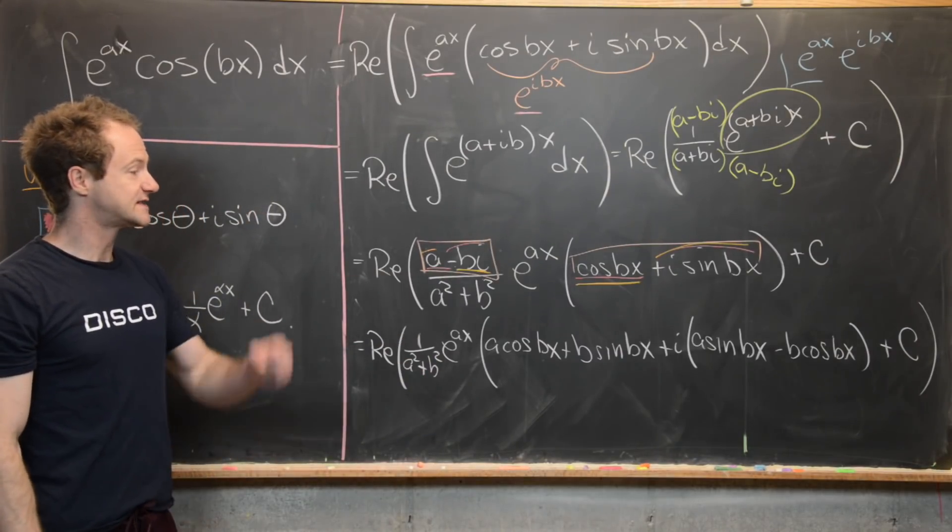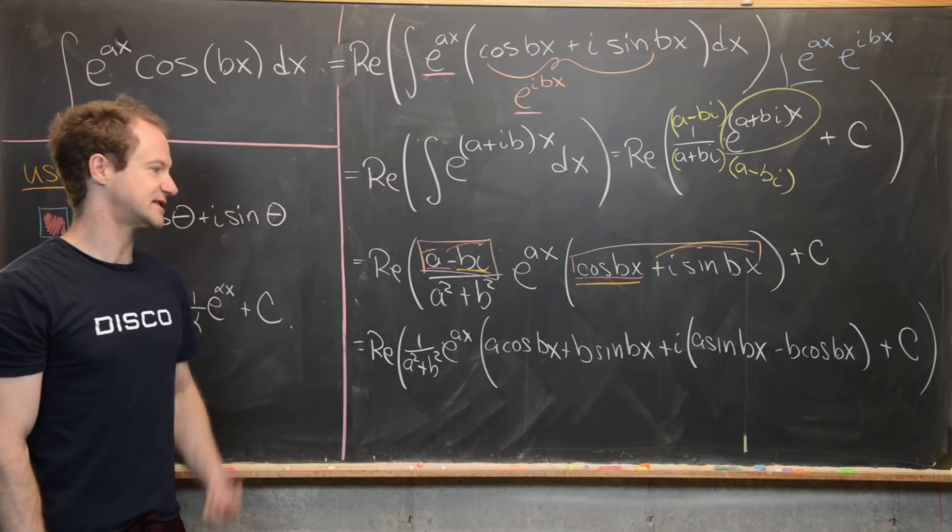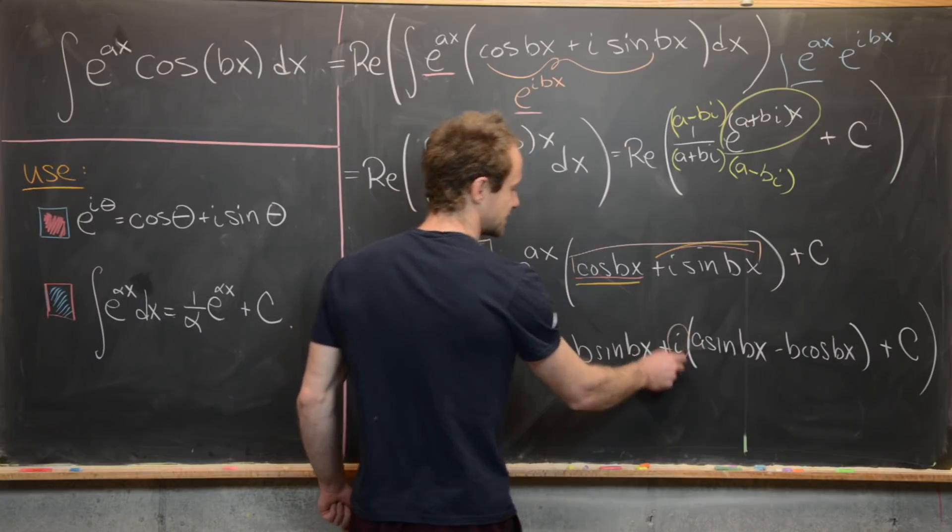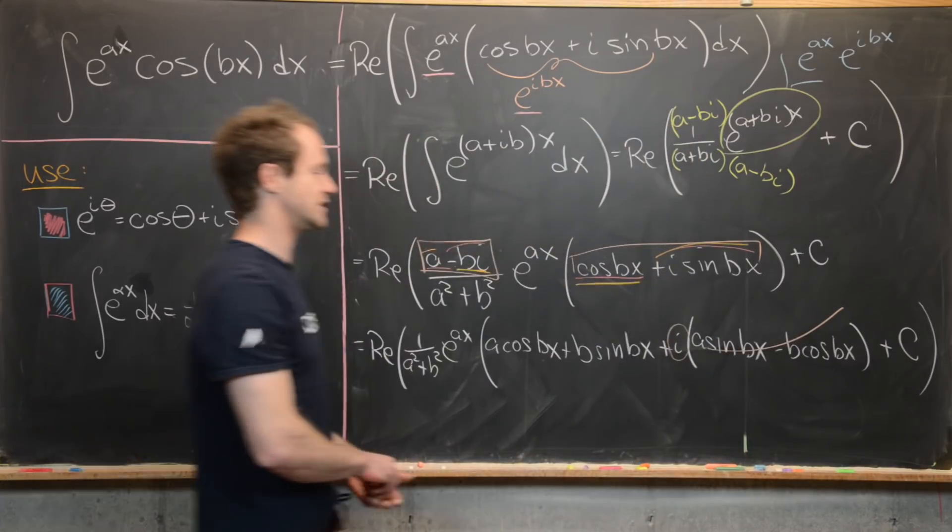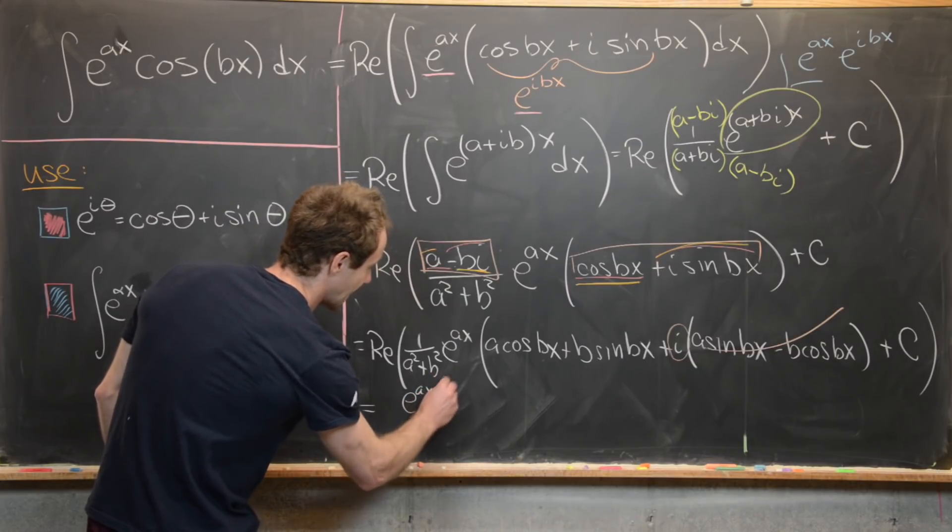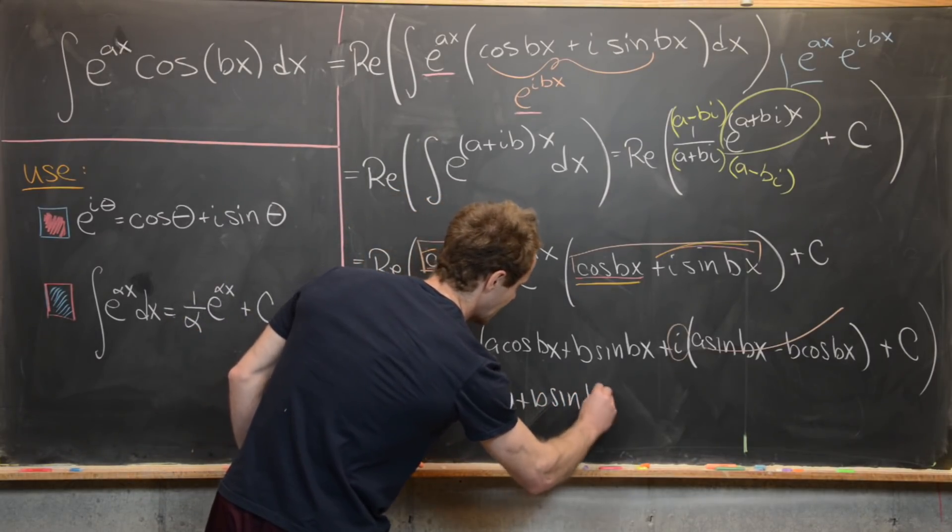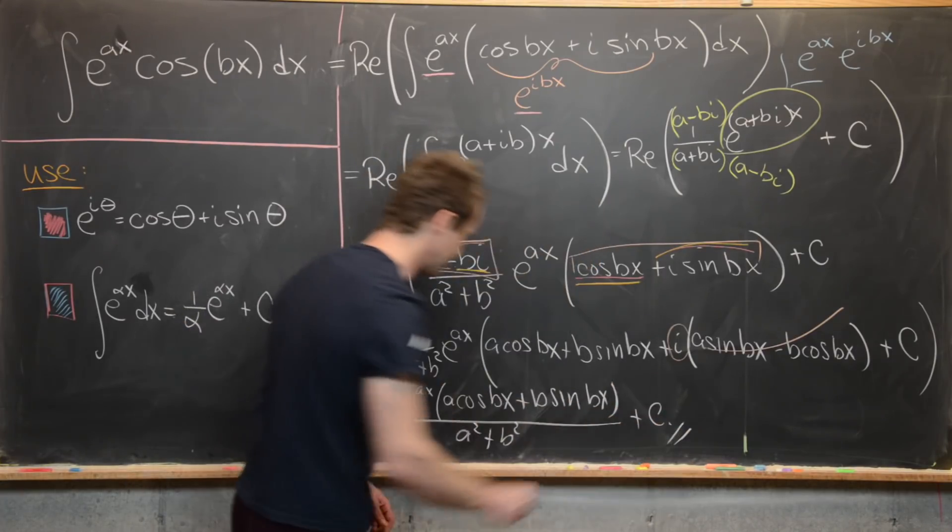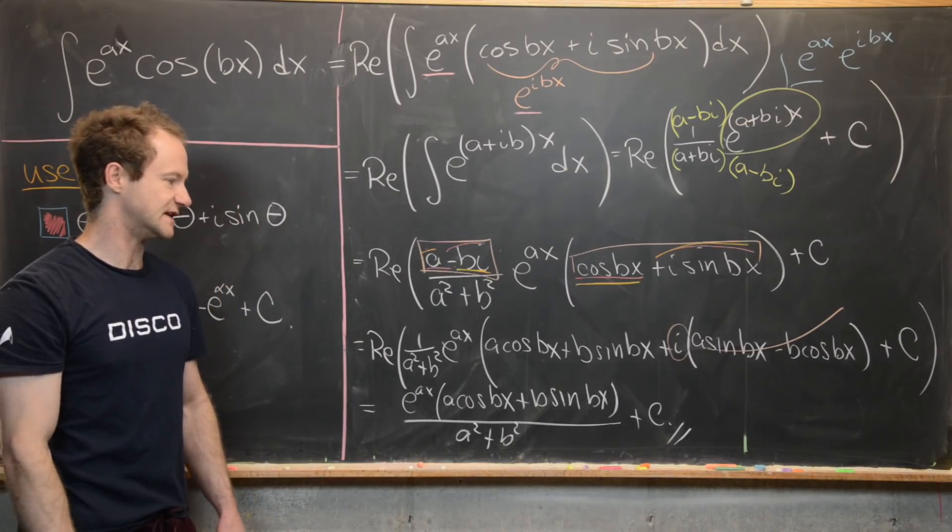So now all we have to do is extract the real part from this. Again, we're considering a, b as being real constants, c is a real constant, and x is a real variable. So the only thing that's imaginary in this whole setup is whatever is multiplied by this i that we're using as a tool. So that means if we take the real part of that, this part is going to cancel. And that leaves us with, let's see what we have, we have e^(ax)·(a·cos(bx) + b·sin(bx))/(a²+b²) and then plus a constant. And that's our final answer. And that's a bit quicker than doing the integration by parts twice and then solving.